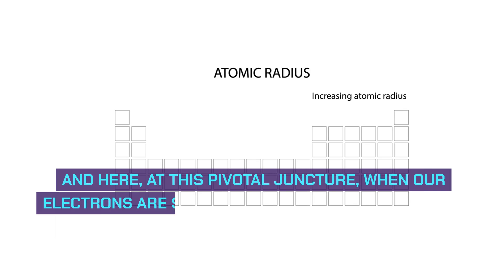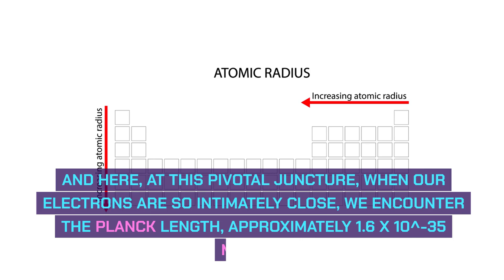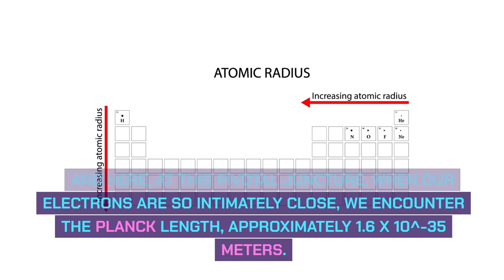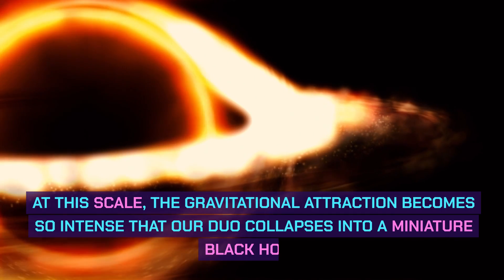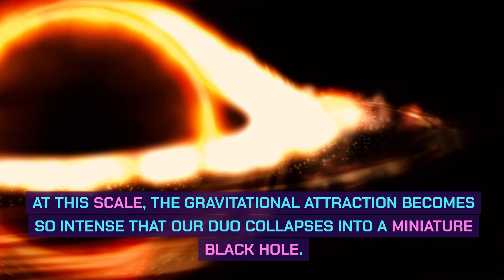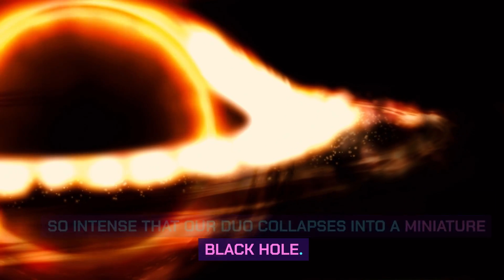And here at this pivotal juncture, when our electrons are so intimately close, we encounter the Planck length, approximately 1.6 x 10^-35 meters. At this scale, the gravitational attraction becomes so intense that our duo collapses into a miniature black hole.